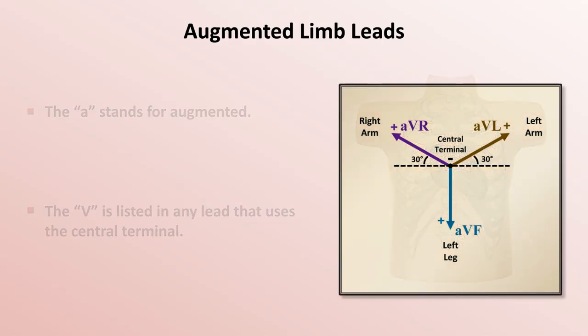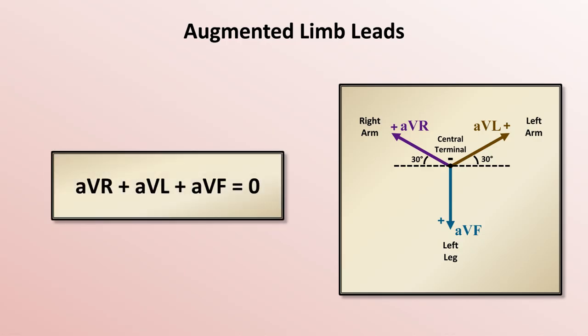As with Eindhoven's triangle, this collection of leads has an interesting and important relationship. AVR plus AVL plus AVF equals 0. That is, at any given point in time, the voltages as measured by the three augmented limb leads must cancel each other out.